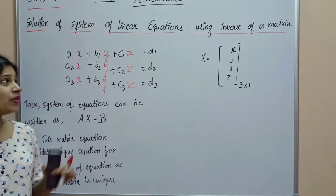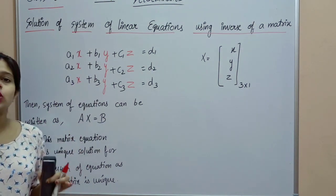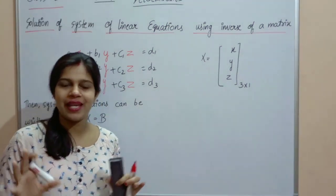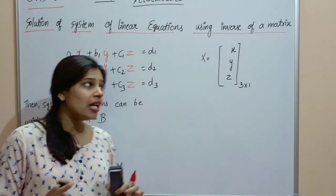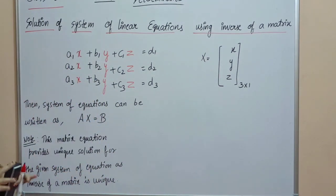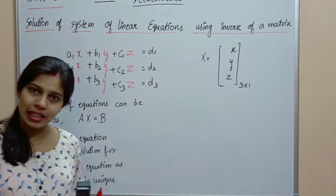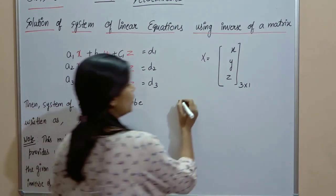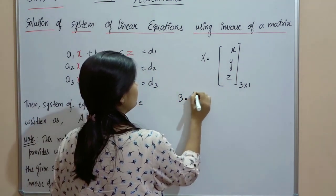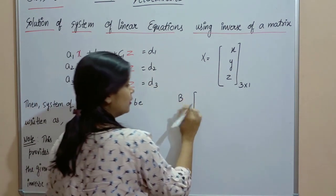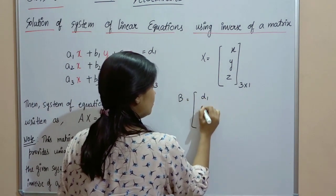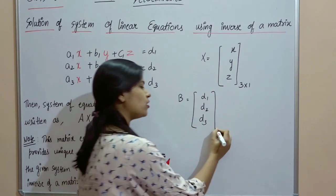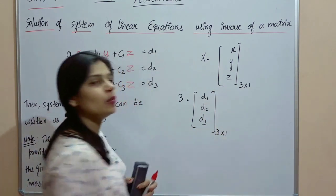A1, A2, A3, B1, B2, B3, C1, C2, C3, D1, D2, D3 — ye meri fixed numbers hain, koi bhi ho sakti hain, minus 2, minus 3 koi bhi. X, Y, Z yahan pe variables hain, hame x, y, z ki values nikalni hoti hain using inverse of a matrix. So B mein D1, D2, D3 ko main B consider karungi. So this is a 3 cross 1 matrix — 3 rows and 1 column.